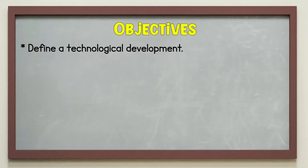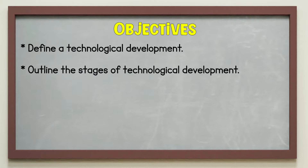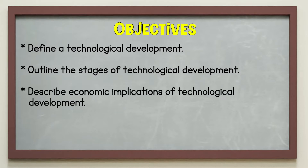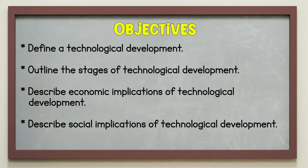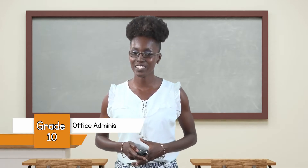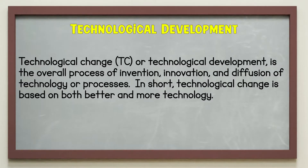Our lesson's objectives are to define technological development, outline the stages of technological development, describe the economic implications of technological development, and describe the social implications of technological development. Technological development, or technological change (TC), is the overall process of invention, innovation, and diffusion of technology or processes. In short, technological change is the basis of both better and more technology.